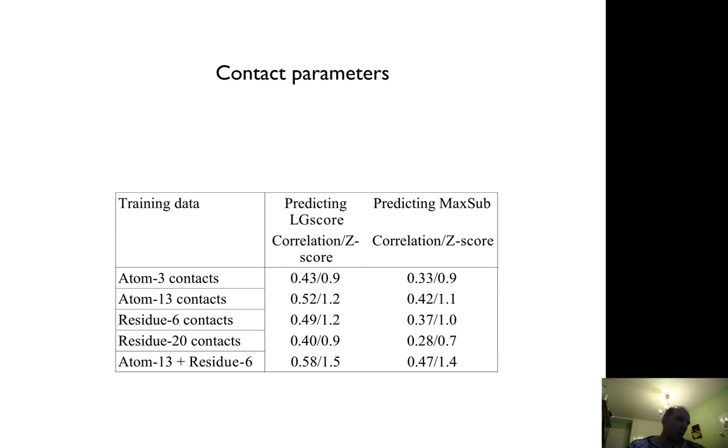On the other hand, if you use 20 types of residues, we had 0.40, but if we only used six types, which were grouped together, we got 0.49. And if we combined atom and residue features together, we had the best performance of 0.58 correlation.